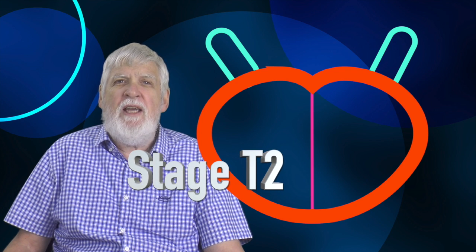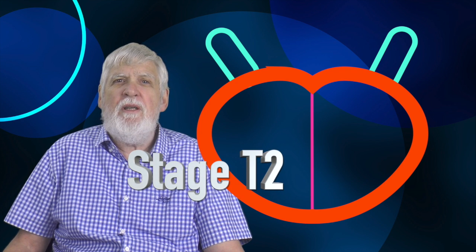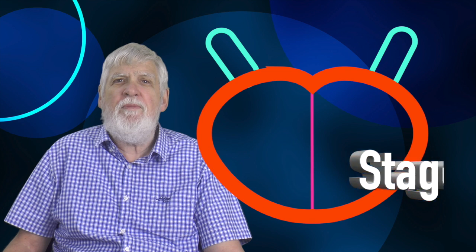Here's our first one. The cancer is completely inside the capsule. The cancer is completely inside one lobe. The cancer takes up less than half of one lobe. This is called a T2A cancer.